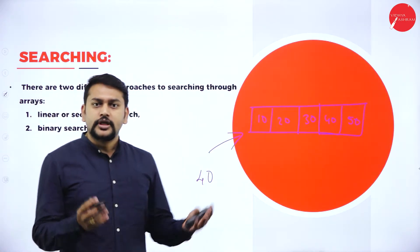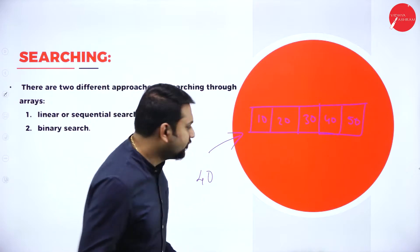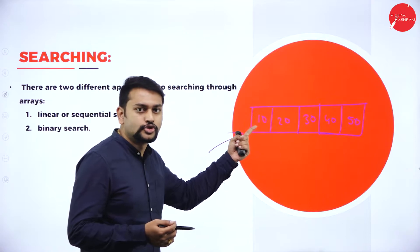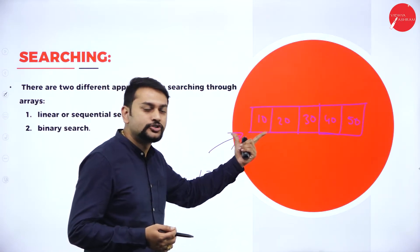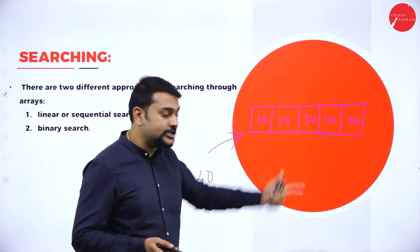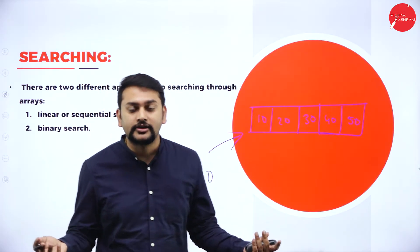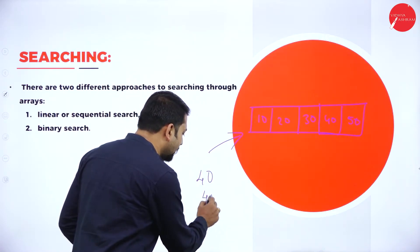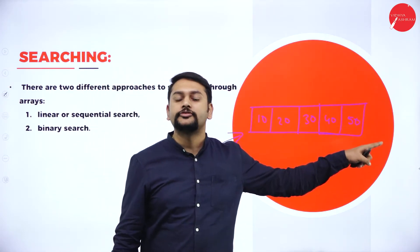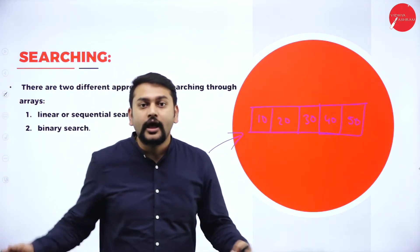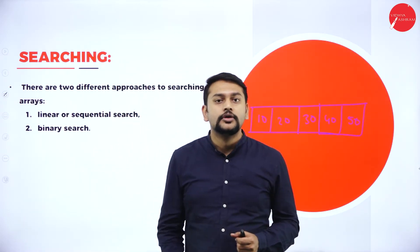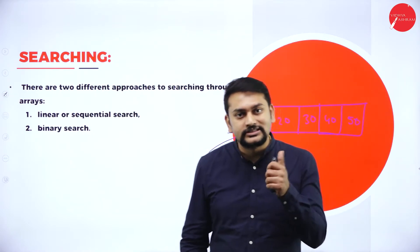Say for example, I need to check whether I have 40 in this array or not. I will compare 40 with 10 — not matching. Compare with 20 — not matching. Compare with 30 — not matching. Compare with 40 — yes, it is matching! Element found. Suppose if I want to search for 45, I will compare with all items and finally say element not found.